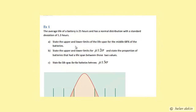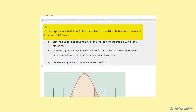Example 1. The average life of a battery is 25 hours and has a normal distribution with a standard deviation of 1.3 hours. We're asked to answer three questions: state the upper and lower limits for the lifespan for the middle 68% of the batteries; state the upper and lower limits for mean plus or minus two standard deviations and the proportion of batteries in that range; and state the lifespan for batteries within mean plus or minus three standard deviations. Let's take a look at each of those three questions.